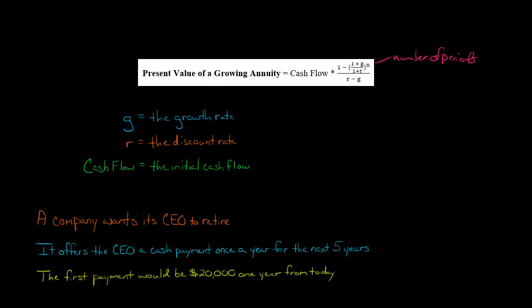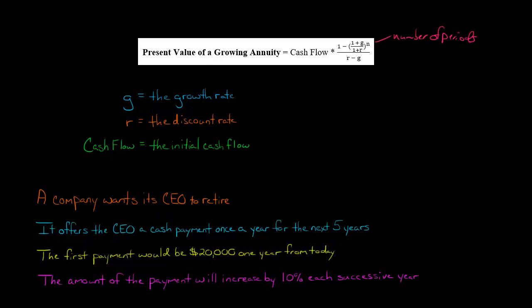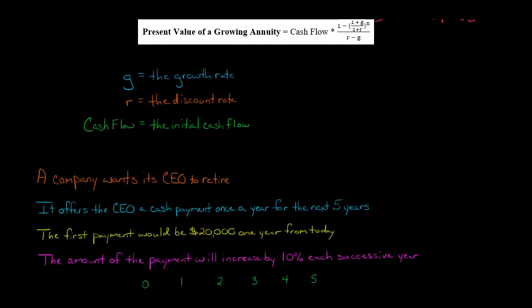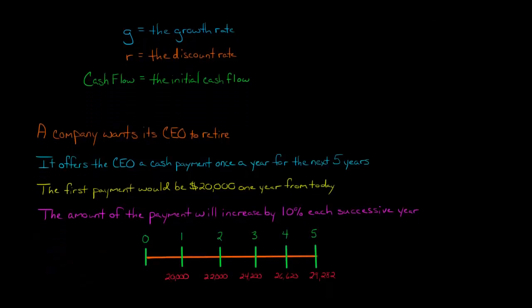So the very first payment that the CEO receives is going to be one year from today, and it's going to be $20,000 cash. But then that payment is going to increase. Each year, it's going to be 10% higher than what it was the year before.